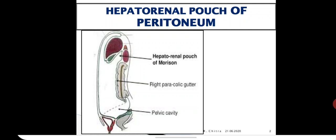On the right side, it communicates with the right anterior intraperitoneal recess. On the left side, it communicates with the omental bursa through the epiploic foramen.